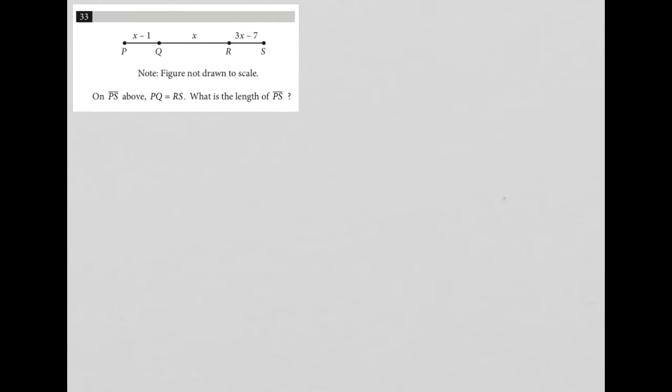So this question is a diagram question because it provides some visual input for us. We have this number line here, or at least this line that has points. We have P, Q, R, S, and then we have these expressions here that represent the distance between our letters.